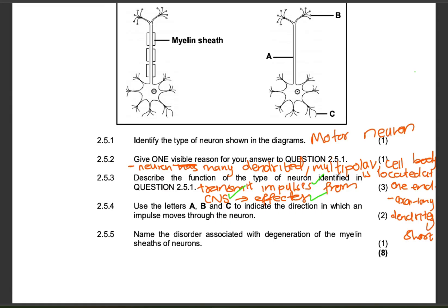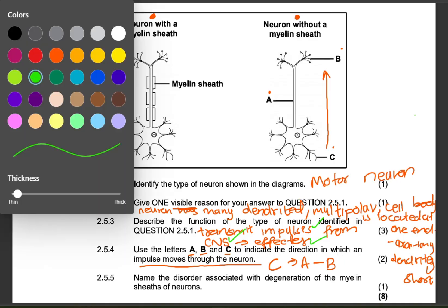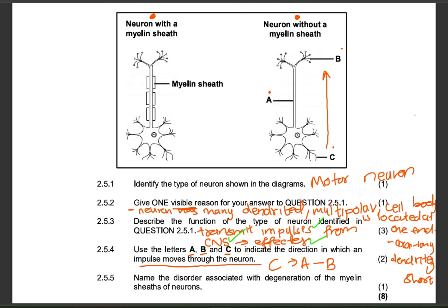Question 2.5.4: use the letters A, B, and C to indicate the direction in which an impulse moves through the neuron. The direction will obviously be C, A, B. Two marks for the correct indication of the direction. The neuron has many dendrites — it's supposed to have an S at the end.